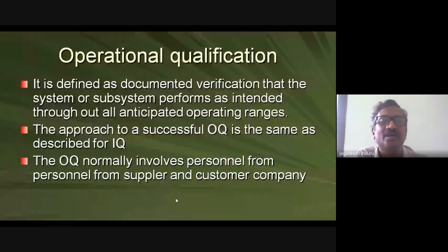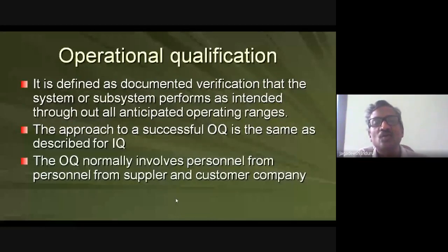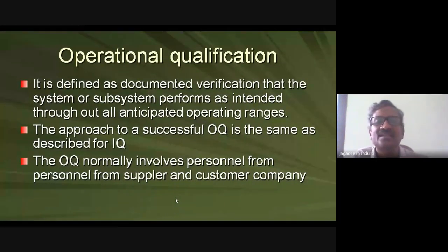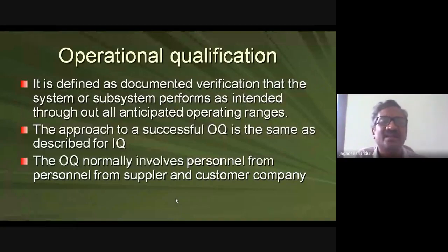If you intend to heat at 250°C but the dryer only reaches 200°C maximum, or goes beyond 300–400°C without control, the operational qualification fails. Similarly, if a vacuum pump intended to reach 0.1 mm Hg cannot achieve it, that part of the system is rejected. Even though installed, the equipment cannot be used in the factory unless the entire lower and upper operating limits — such as the compression machine's RPM range — are verified.